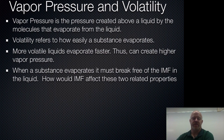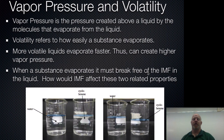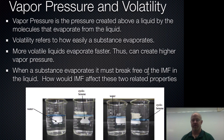Now, when a substance evaporates, it has to break free of its intermolecular forces (IMFs). So how are vapor pressure and volatility related to IMFs? The easier it is for something to evaporate means it's easier to break free, so it must have lower intermolecular forces.